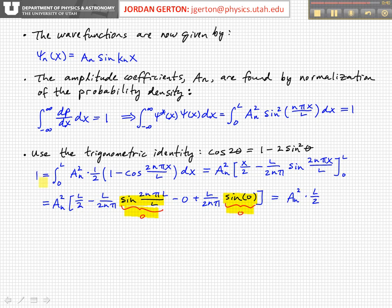And so you have that a_n squared times L over 2 is equal to 1. And therefore, a_n is equal to root 2 over L.